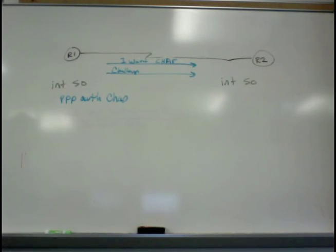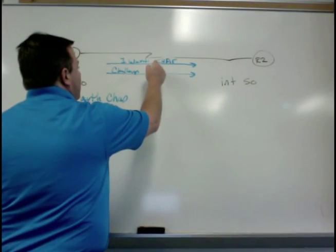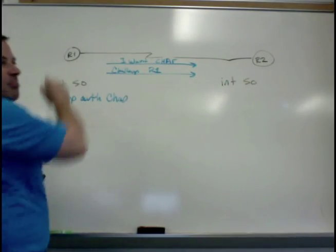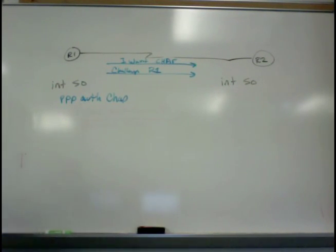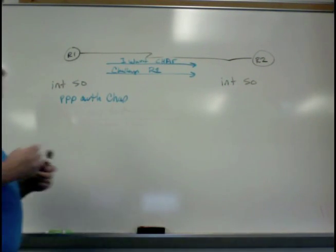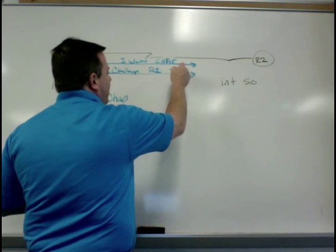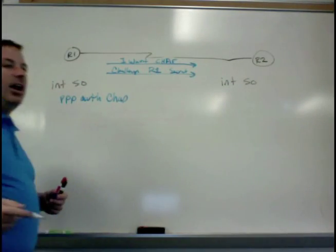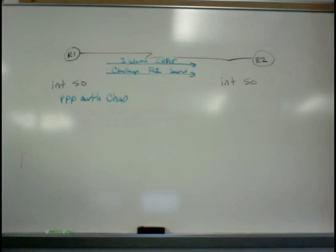Now, that challenge that goes across is going to have a key piece of information as part of the challenge. Well, it's going to have two things. One of the things it's going to have is this side's router name. And that's what was on that previous slide. It's also going to have a secret, or it's going to have the value that's going to help with the hash.